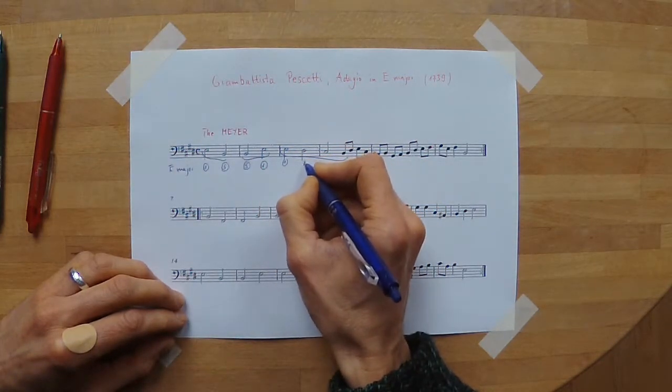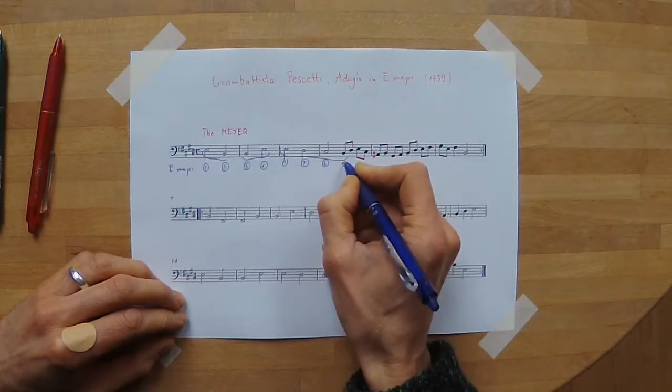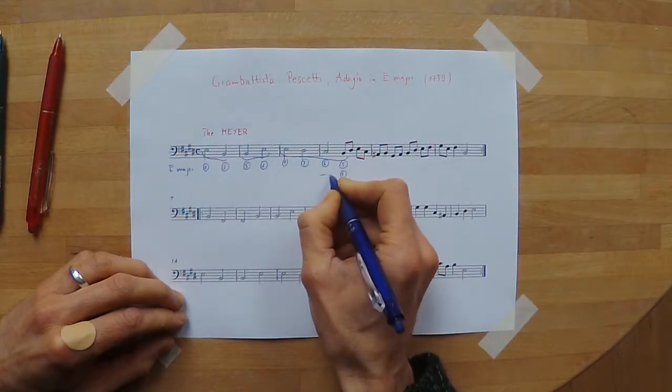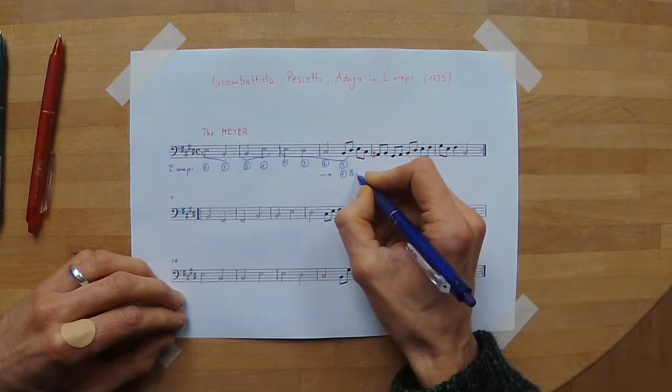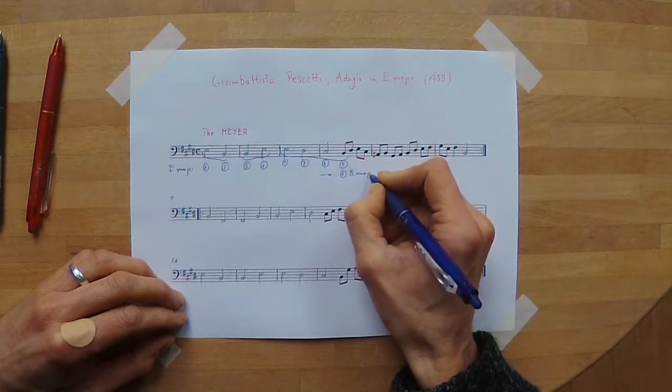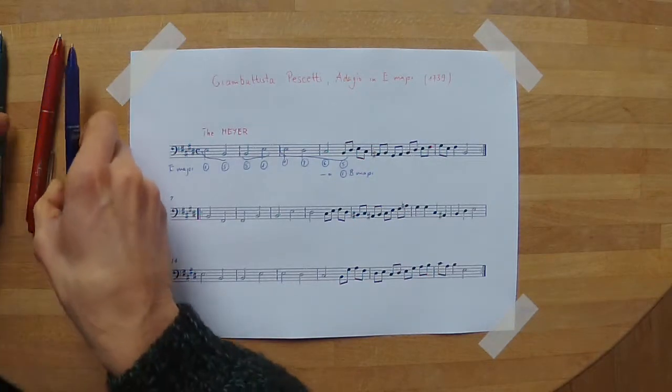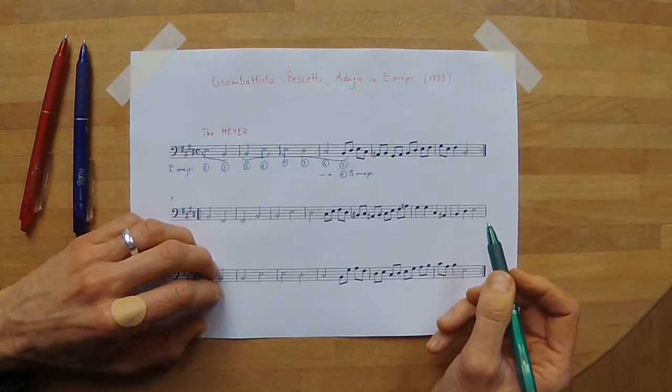Next I see a descending scale, very much like the rule of the octave. I can do a very elegant way to smoothly take me from the tonic E major to the dominant key of B major.